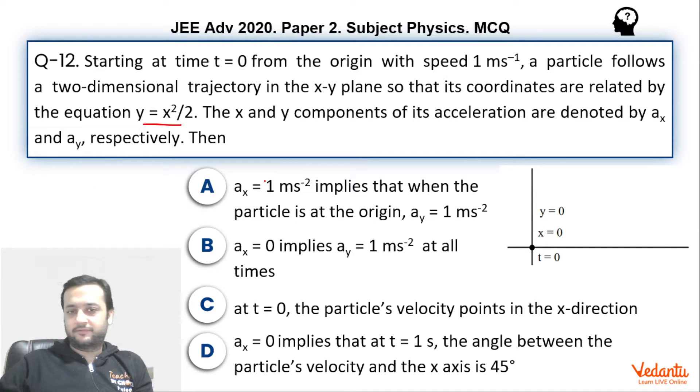So basically we have been given some options and we have to check some options like ax equals to 1 implies ay equals to 1, ax equals to 0 implies ay equals to 1 and all that. So let's do basic analysis first.